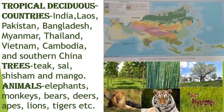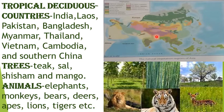The next vegetation type is tropical deciduous vegetation, which can be divided into tropical deciduous and tropical monsoon regions. The tropical monsoon forests experience slightly heavier rainfall than the tropical deciduous vegetation. This vegetation is found in countries like India, Laos, Pakistan, Bangladesh, Myanmar, Thailand, Vietnam, Cambodia and southern China. Trees like teak, sal, sheesham and mango are found.